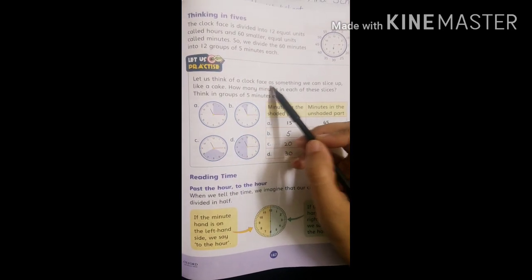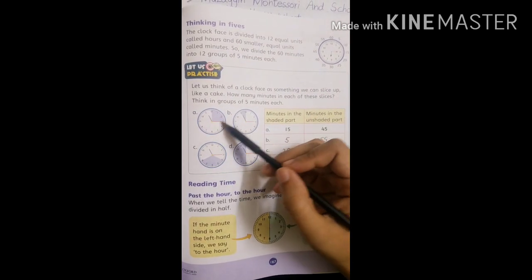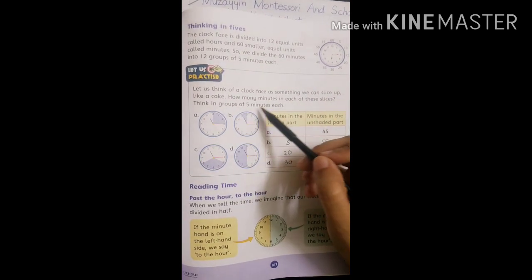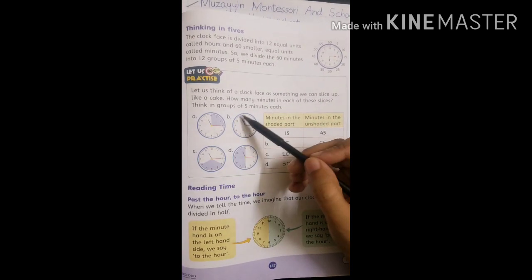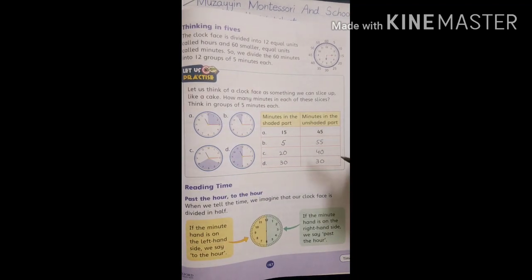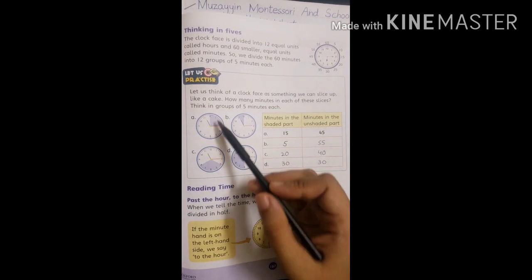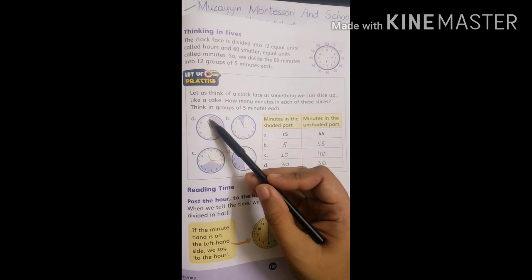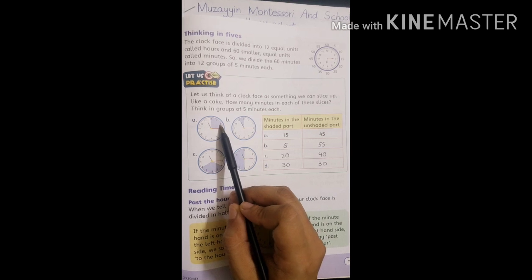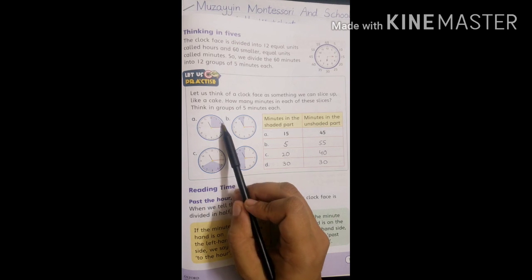Let us think of a clock face as something we can slice up like a cake. How many minutes in each of these slices? Think in groups of 5 minutes each. First, part A: minutes in the shaded part. From 12 to 1 is 5 minutes, 1 to 2 is 10 minutes, 2 to 3 is 15 minutes. Shaded part is 15 minutes.